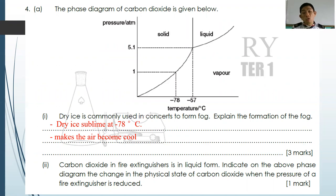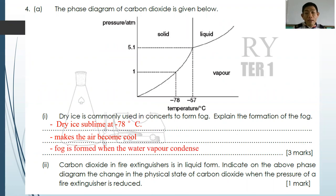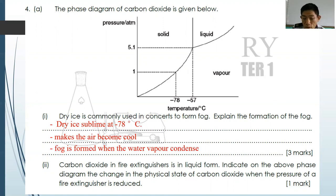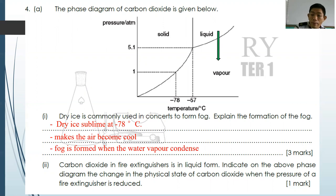The system responds to the decrease in surrounding heat by absorbing more heat, causing the air to become cool. When the air becomes cool, the water vapor can no longer stay as vapor and undergoes condensation to become liquid — that is why you see the white fog. For number two, carbon dioxide in a fire extinguisher is in liquid form. When pressure is reduced, it undergoes vaporization.